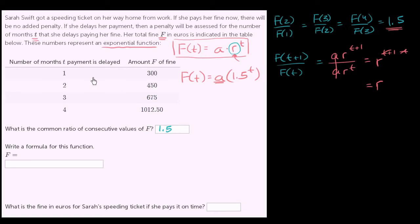To figure out what a is, we could just substitute. We know what f of one is. When t is equal to one, f is equal to 300. So we should be able to use that information to solve for a. f of one is equal to a times 1.5 to the first power, or a times 1.5, and that is going to be equal to 300. So 1.5 times a is equal to 300. Divide both sides by 1.5, and we get a is equal to 200.